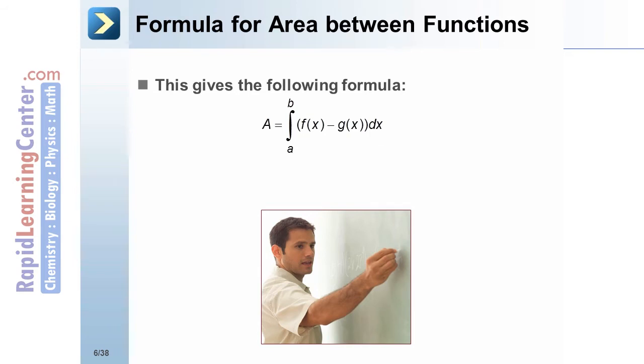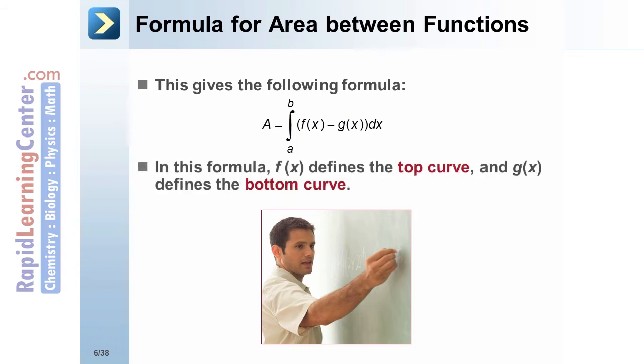The formula for area between functions: this gives the following formula: A = ∫[a to b] (f(x) - g(x))dx. In this formula, f(x) defines the top curve and g(x) defines the bottom curve.